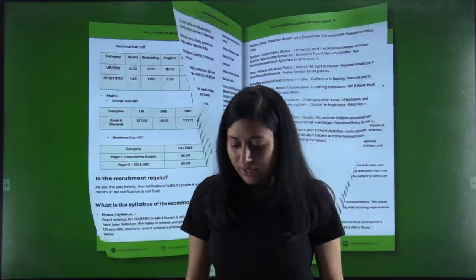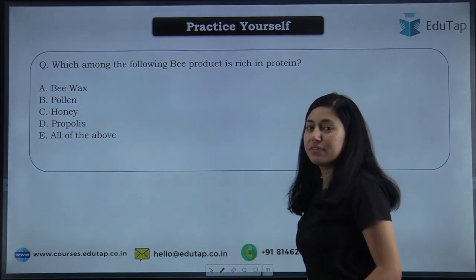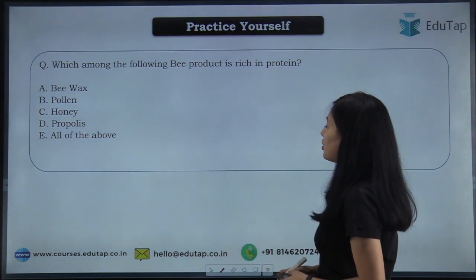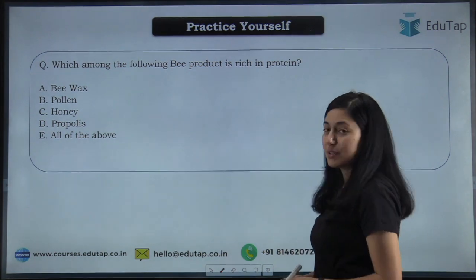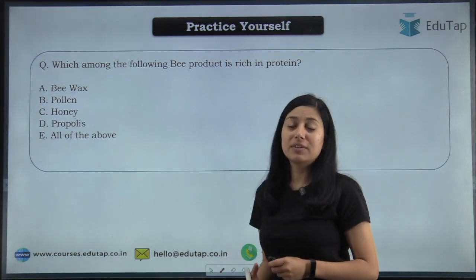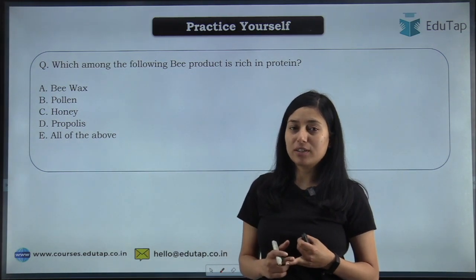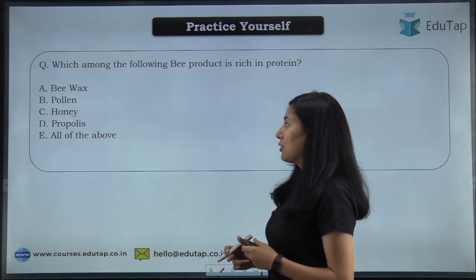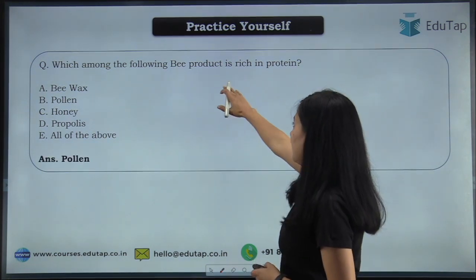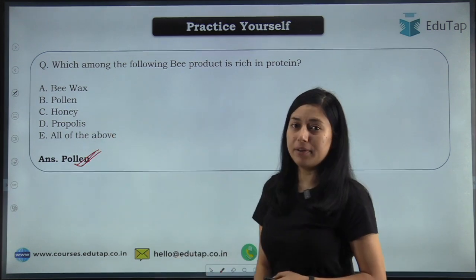Now let's start our video with the question I had given you in the previous video. The question was: which among the following bee products is rich in protein? Options are bee wax, pollen, honey, propolis, or all of the above. In the previous video we discussed apiculture and different bee products, and we know that the bee product which is rich in protein is pollen. So the answer is pollen.